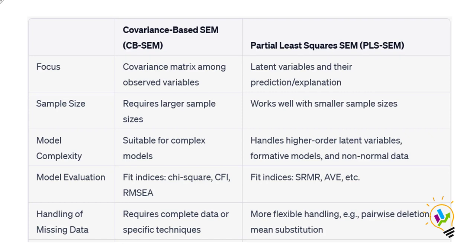The fourth feature is model evaluation. Covariance-based SEM evaluates model fit using indices such as chi-square, CFI, and RMSEA. Whereas Smart PLS deals with CR, AVE — average variance extraction — instead of model fit indices. These are the criteria used to assess measurement quality in PLS-SEM.